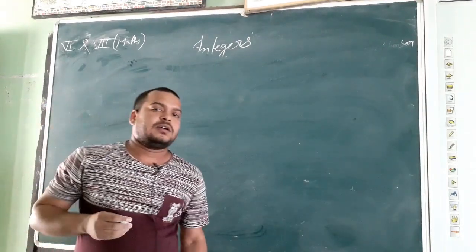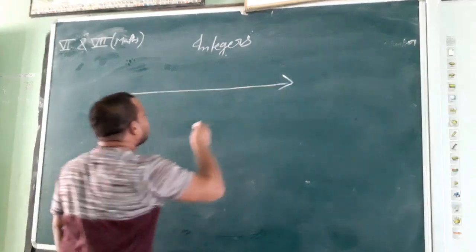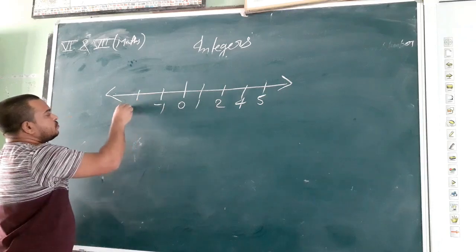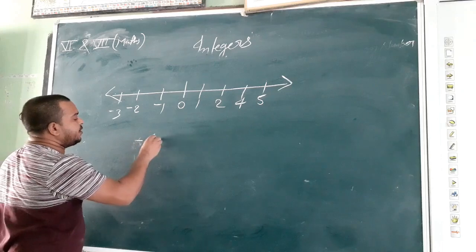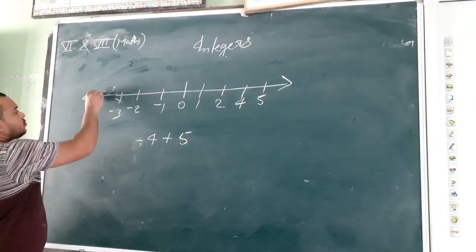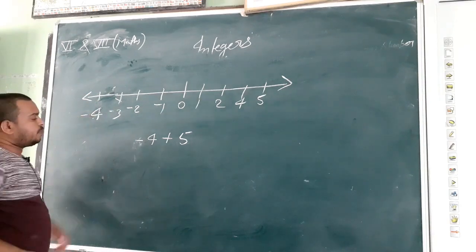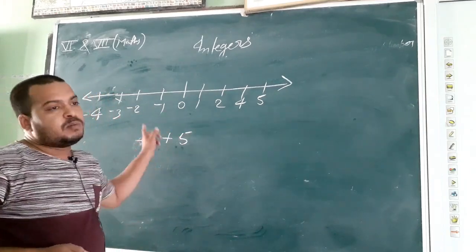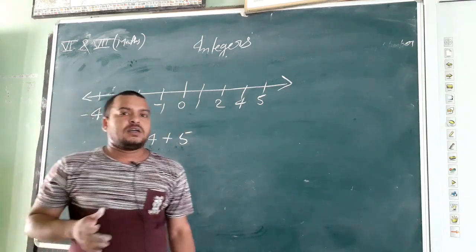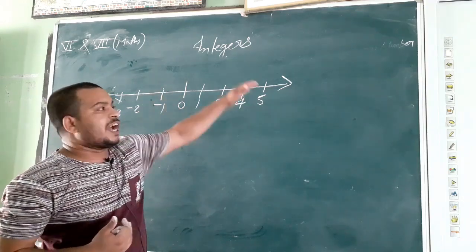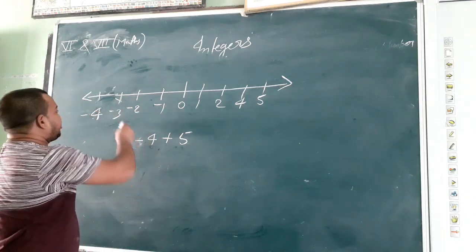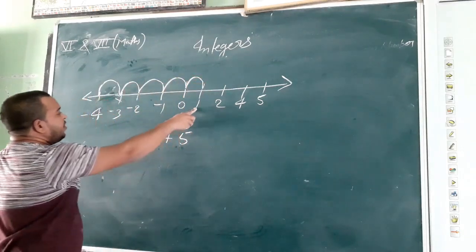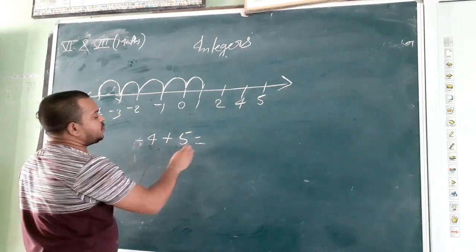Now we will learn how we add integers on a number line. Suppose we have to add plus 5 to minus 4. To add a positive number on a number line, we will move towards the right. We move 5 steps from minus 4: 1, 2, 3, 4 and 5. We reach at 1. So minus 4 plus 5 is equal to 1.